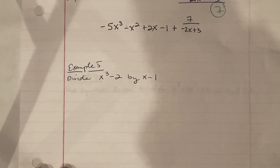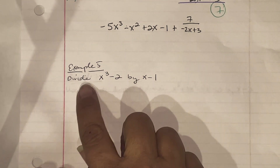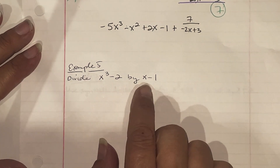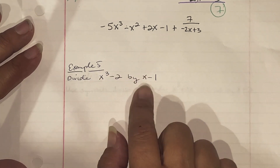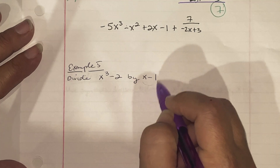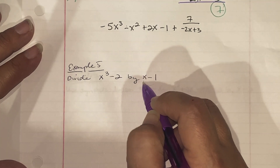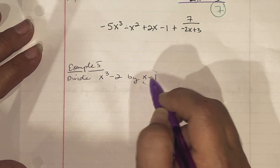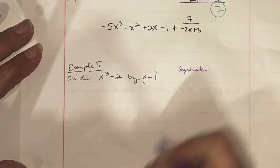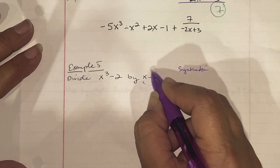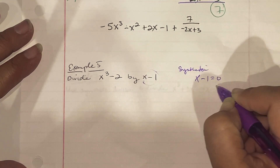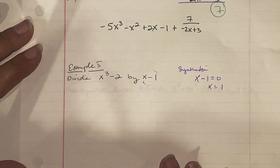Example 5: Divide x cubed minus 2 by x minus 1. When the divisor is a binomial with a leading coefficient of 1, we use synthetic division. Take x minus 1, set it equal to zero, so x equals 1. Put the 1 in the corner.